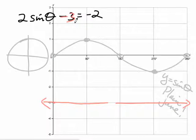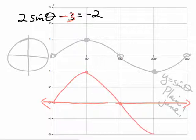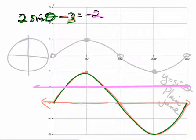What happens when you double it and take away 3? The negative 3 is really just the median — the average. Your curve swings either side of the average: above and below. It's the exact same curve but it bounces around the average, and it swings twice as high and twice as low. So when you graph it, it swings twice as high — that's called the amplitude — and it swings around negative 3. So the question was: when does this swingy green thing equal negative 2?